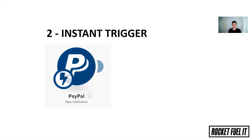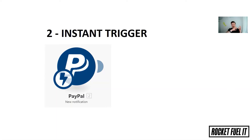The second is the instant trigger. For example with PayPal: someone sent you a payment, you made a payment, or someone requested a payment from you. That means PayPal is going to trigger Integromat, and then your scenario is going to run.